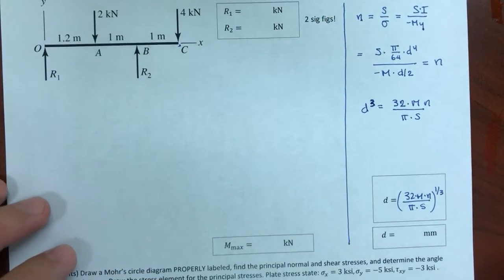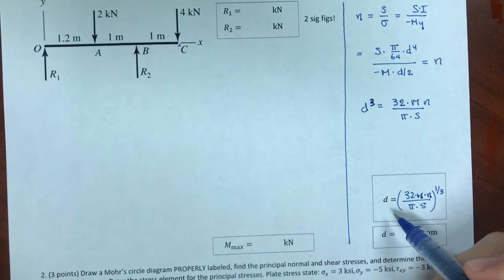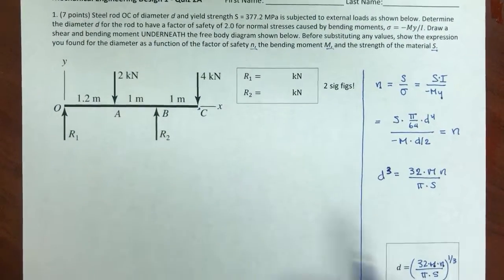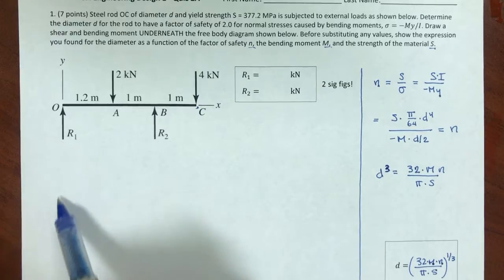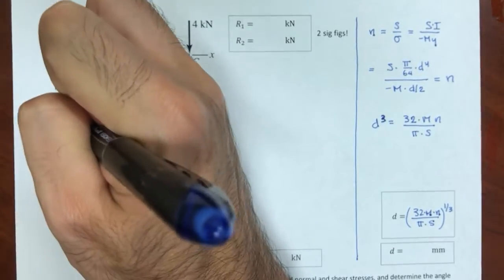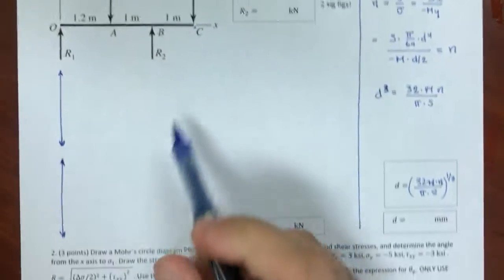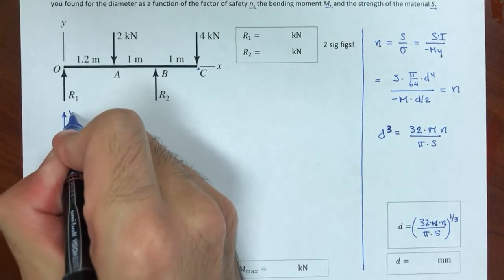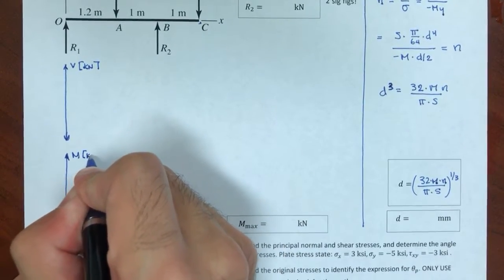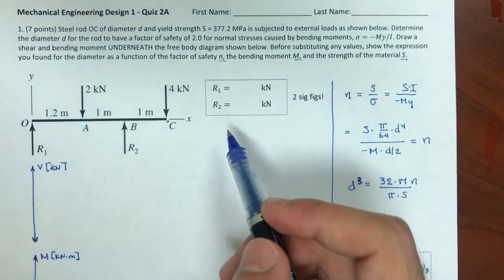That's more than half the problem done. Now I need M — I have n and the material strength. I need the maximum moment to calculate the correct diameter, so I need to identify where the maximum moment occurs. I'll use shear and bending moment diagrams. All forces are in kilonewtons and distances in meters, so V is in kilonewtons and M is in kilonewton·meters.